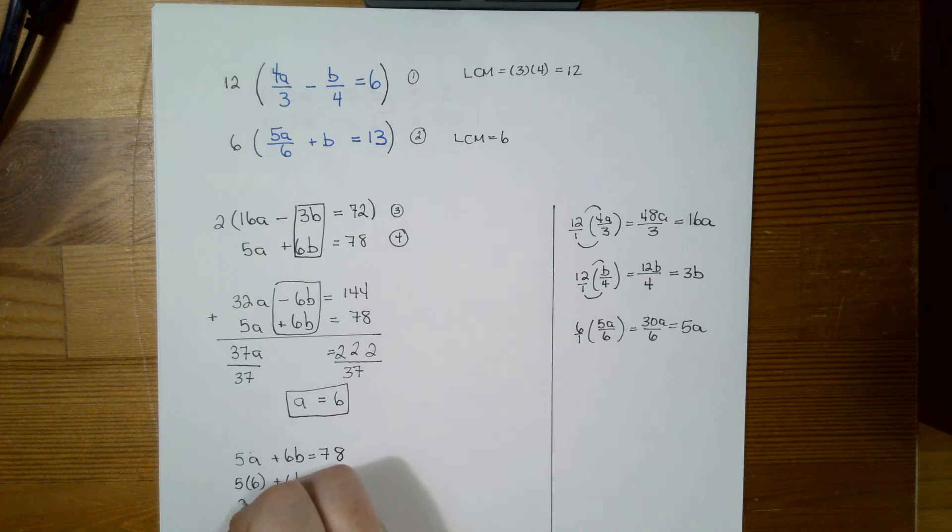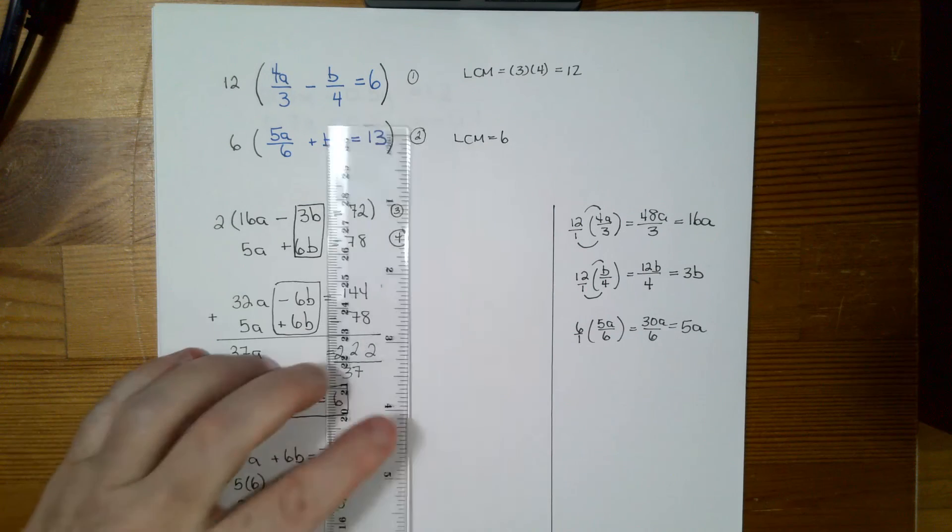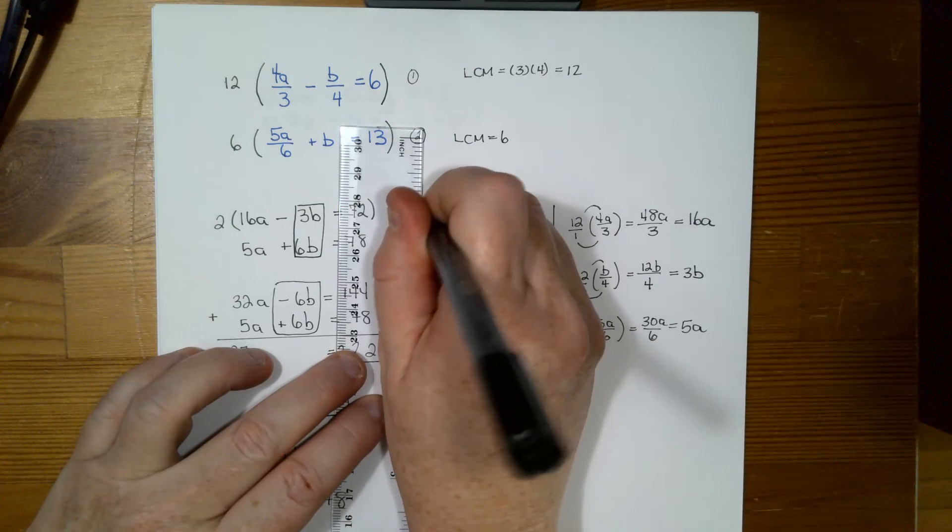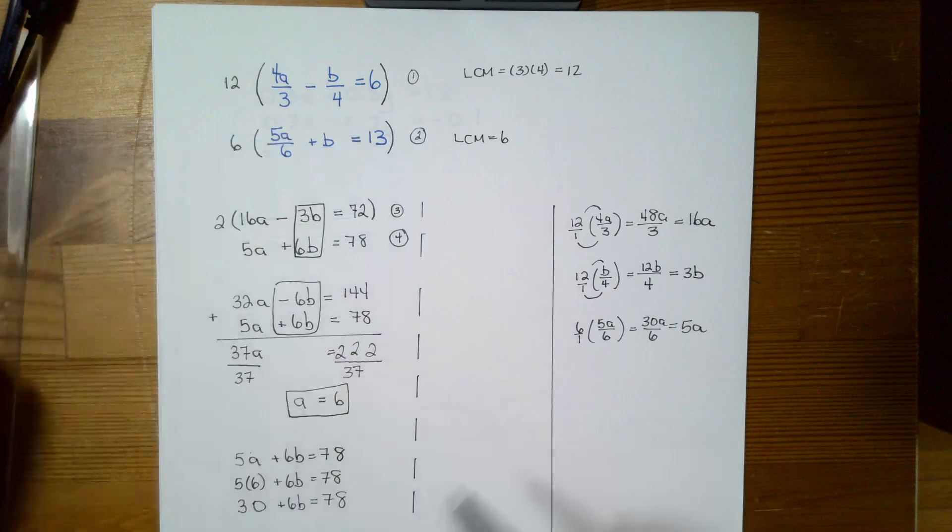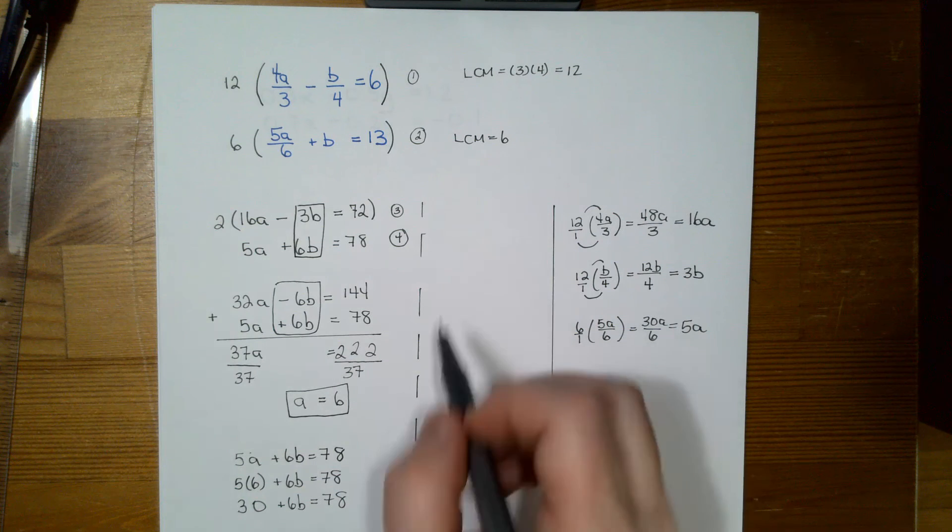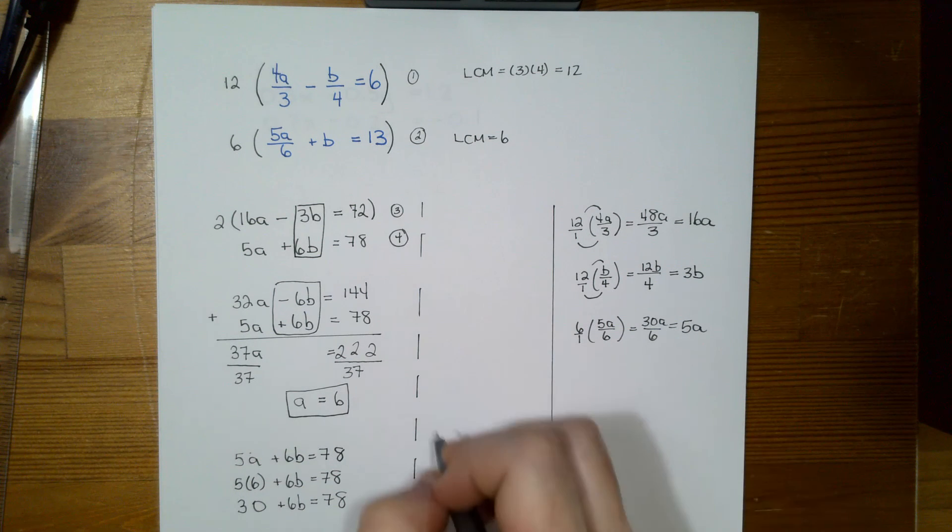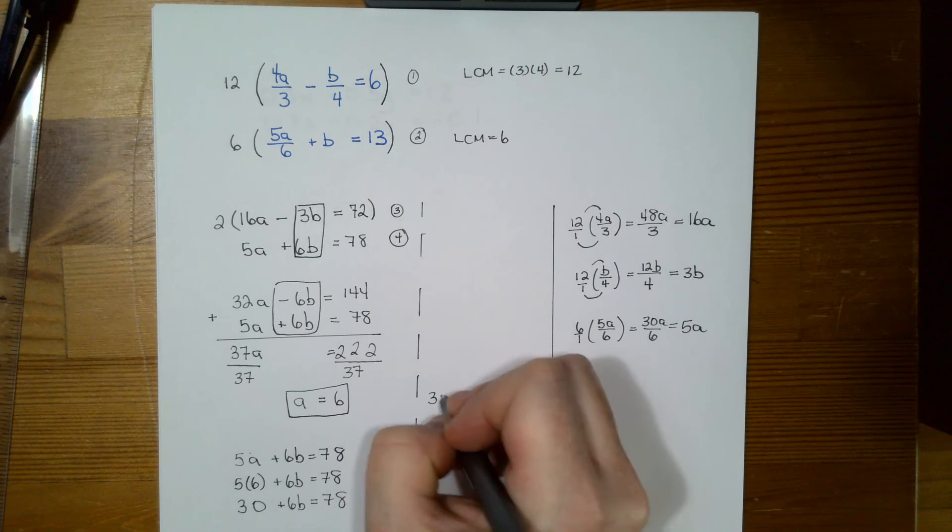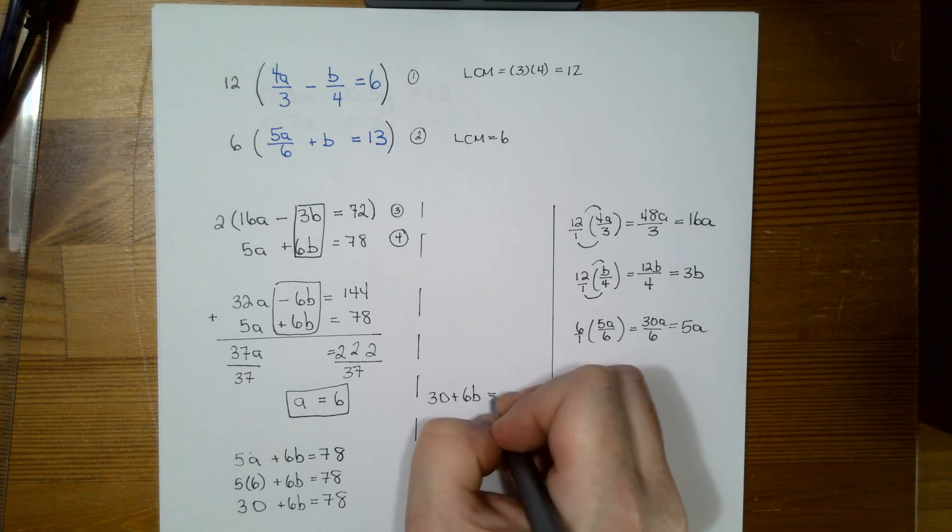Then I have 30 plus 6b equals 78. I'm running out of a little bit of room here. So I'm just going to put a dotted line down here so that I know it's separate when I'm looking at it. So I'm just going to continue over here. Probably don't need much more room. So I'll just start like here. So I have 30. And I'm just rewriting it so that I don't lose track plus 6b equals 78.